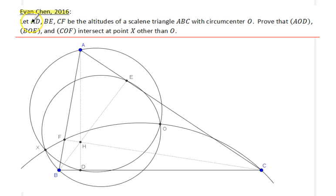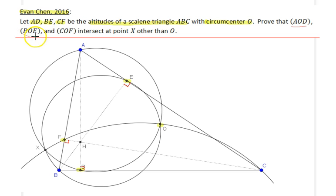Going back to the question: we are told that AD, BE, and CF are the three altitudes of a scalene triangle. You can see the feet of these altitudes here — let me clearly mark that these are 90-degree angles. The circumcenter of our triangle is O, the intersection of the perpendicular bisectors of the side lengths. We would like to prove that the circumcircles of triangles AOD, BOE, and COF all intersect at a point X, other than the point O.